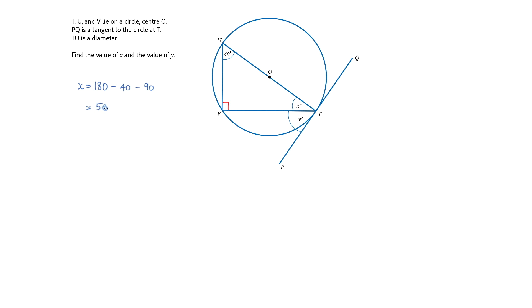The second theorem we're going to use has to do with this tangent line here, PQ, meeting the diameter at point T. This angle here will always be 90 degrees. And since we know angle X, we can calculate angle Y. So Y equals 90 minus X, and X is 50. So Y is 40.